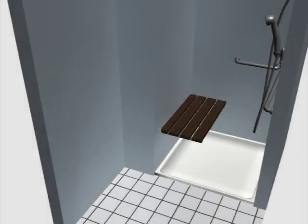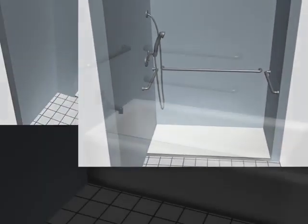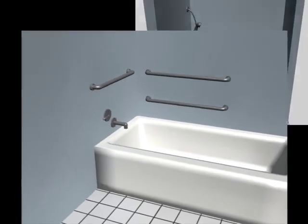This animation explains requirements for accessible bathing facilities in the ADA and ABA standards. These standards provide specifications for transfer showers, roll-in showers, and bathtubs. At least one shower or bathtub must comply in bathing facilities required to be accessible.